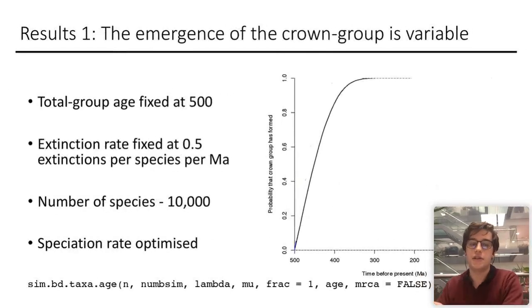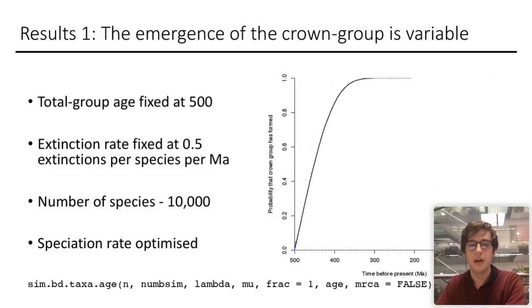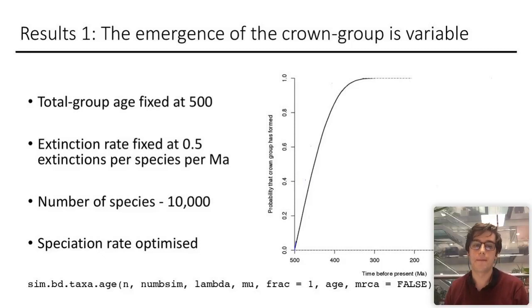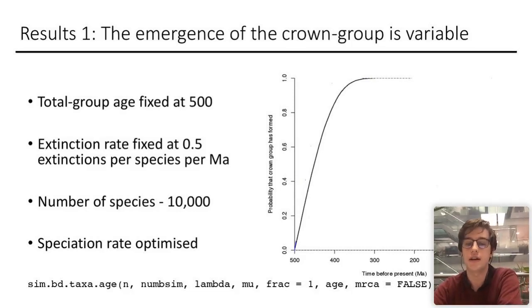We simulate a large number of trees using a function in the TreeSim package with the following parameter values: total group age fixed at 500 million years, 0.5 extinctions per species per million years, trees simulated with 10,000 tips, and a speciation rate optimized so that 10,000 is the expected number of tips in that amount of time.